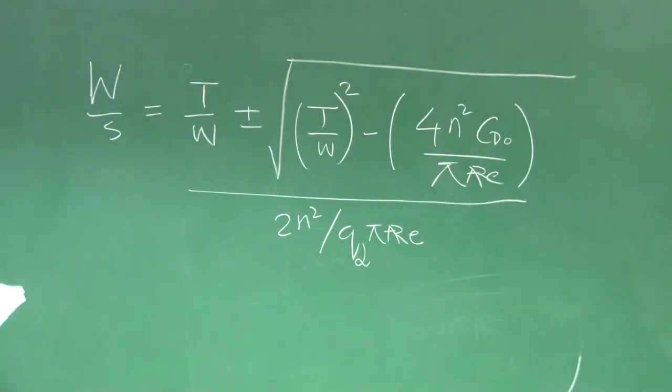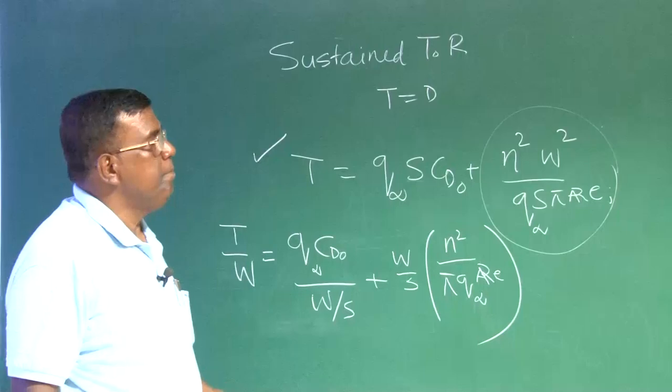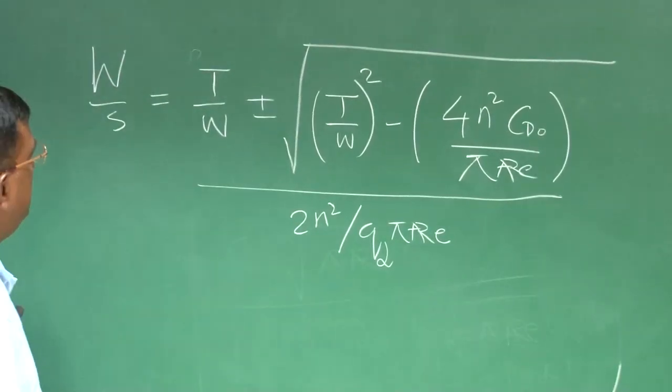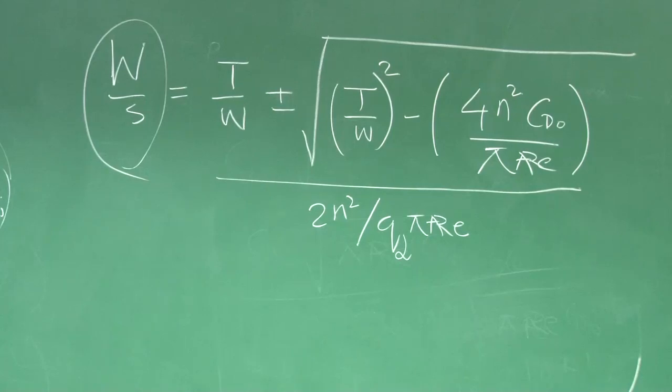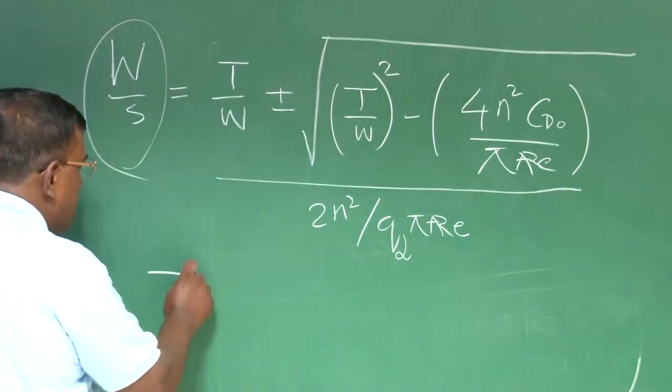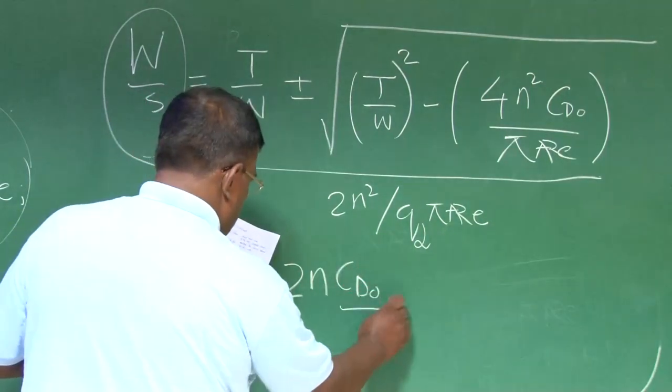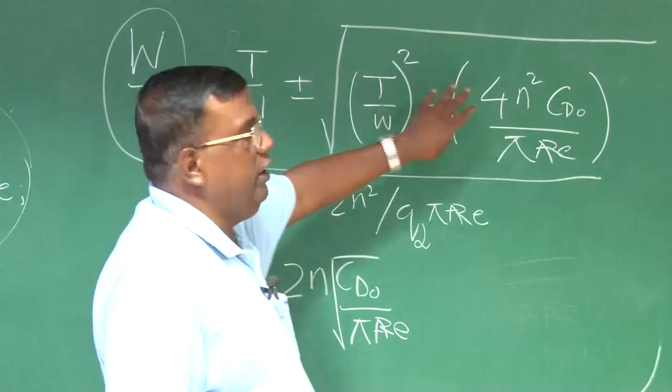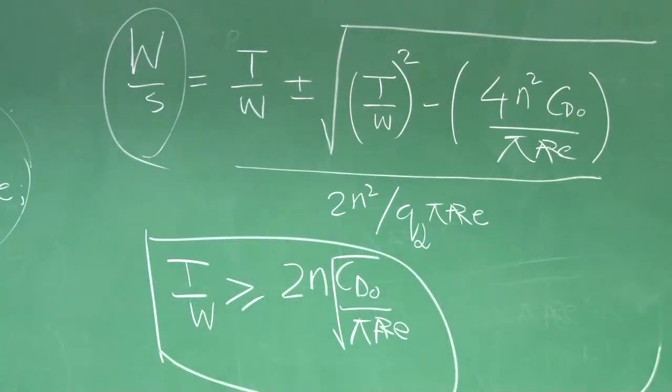This expression I can further rearrange to write W by S equal to T by W plus minus under root T by W square minus 4 N square CD0 by pi aspect ratio E divided by 2 N square by Q infinity pi aspect ratio E. For the youngsters, you please yourself should derive this expression from here. You could see it is quadratic in W by S. So you can find out W by S and these are two roots. What is important here, you could see that whatever may be wing loading, to make a real sense of this expression, you have to select T by W such that it is greater than equal to 2 N CD0 by pi aspect ratio E under root, right? B square minus 4ac should be greater than equal to 0. So from here, this gives you a condition, whatever may be, irrespective of wing loading, you have to ensure that T by W is greater than equal to 2 N under root CD0 by pi aspect ratio E.